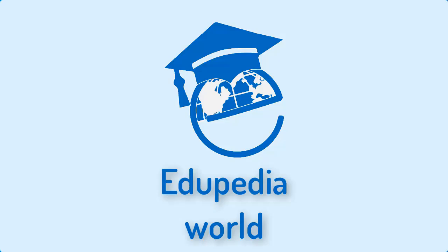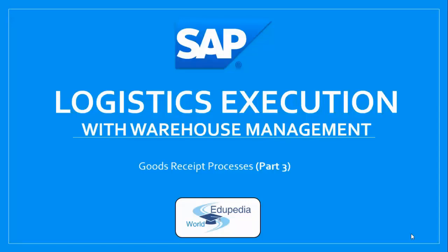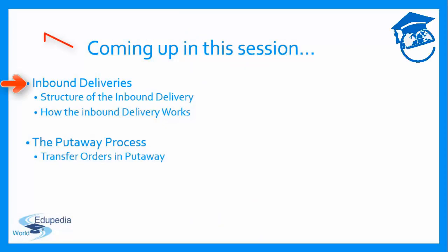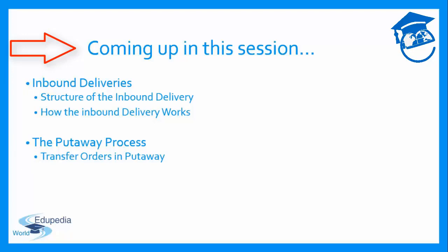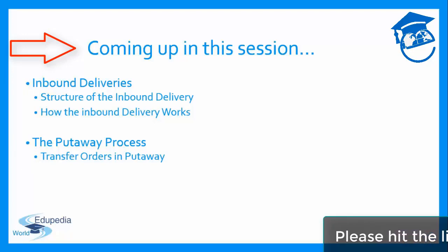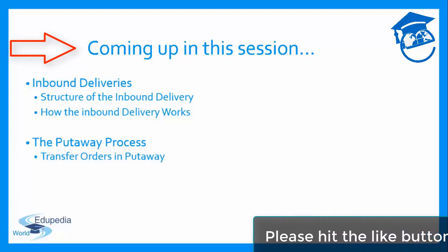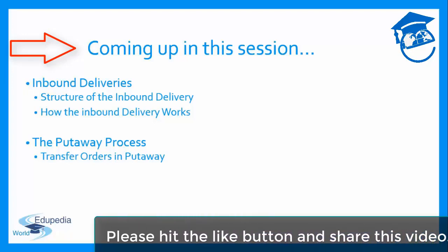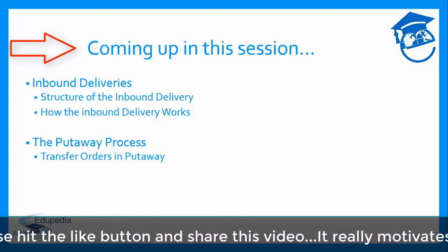Hello and thank you very much for joining me once again in this third part, the final part of our three-part lecture on goods receipt processes. In this part we're going to look at inbound deliveries — their structure and how we use them — and then how we use transfer orders to perform putaway. This is the final lesson, and hopefully we're going to put a nail in the coffin for goods receipt processes before we proceed to goods issue processes.